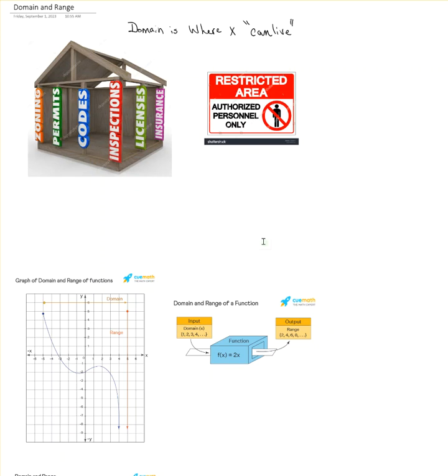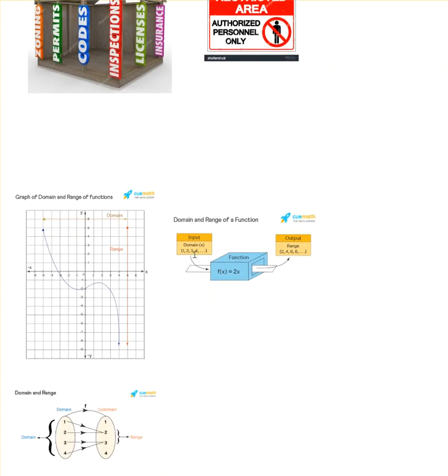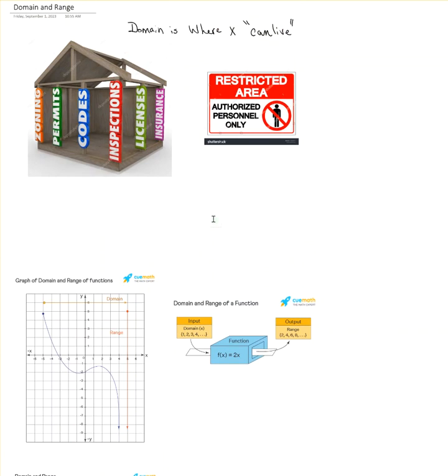This is a short video to talk about domain and range. Domain is where X can live. Think about a housing area. If you live in a neighborhood, any kind of neighborhood, there are restrictions. There are zoning restrictions and codes. They can't come build a store in the middle of your neighborhood. They can't put any kind of entertainment building inside your neighborhood. There are restrictions. And so just like that, graphs and functions in algebra sometimes have restrictions.